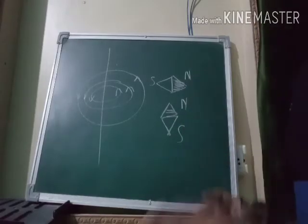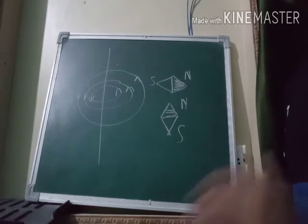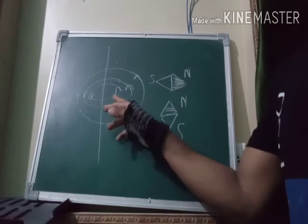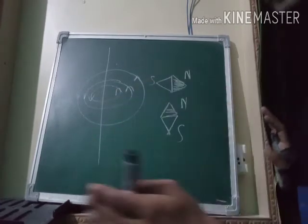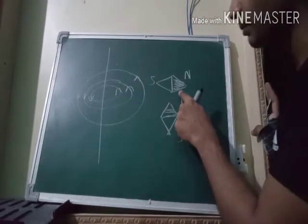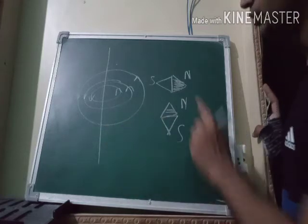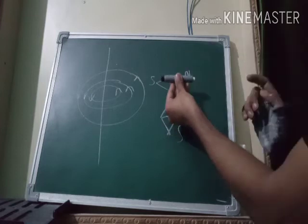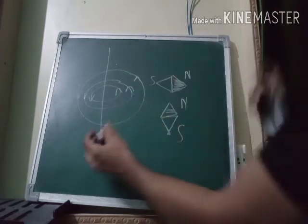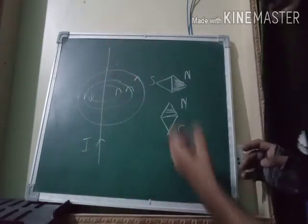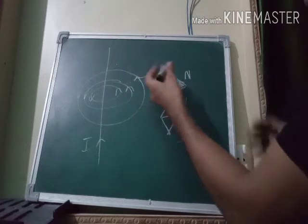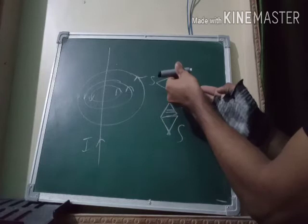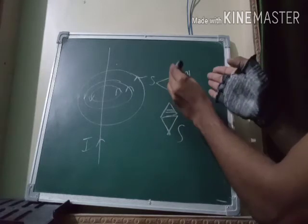A current-carrying wire can act as a magnet and gives out magnetic lines of force in the shape of concentric circles. When we place a compass needle near a current-carrying wire and switch on the current, the magnetic compass deflects and aligns itself in the direction of the magnetic lines of force. On one side lines are coming out of the plane, and on the other side they are going into the plane.